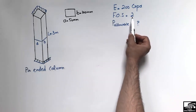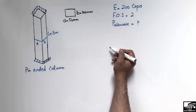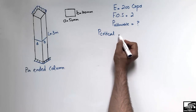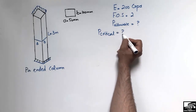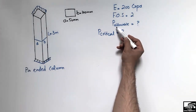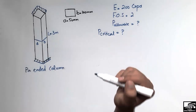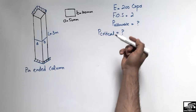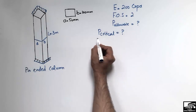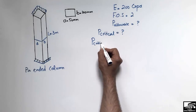For this problem, first we have to find P_critical — the load at which the column will start to buckle. Once we find P_critical, we can find P_allowable. P_critical is the ultimate load for this column.